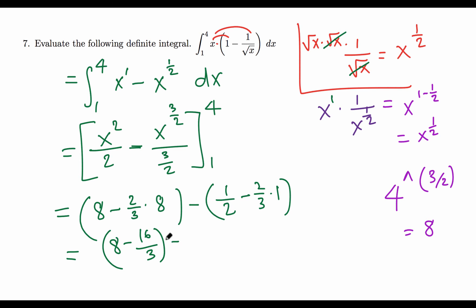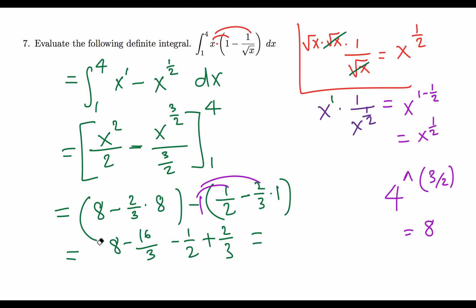Distributing the negative sign: we get 8 minus 16/3 minus 1/2 plus 2/3. Combining the thirds: negative 16/3 plus 2/3 gives negative 14/3.